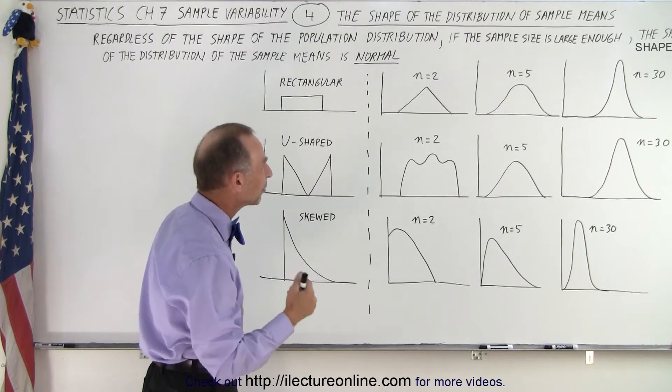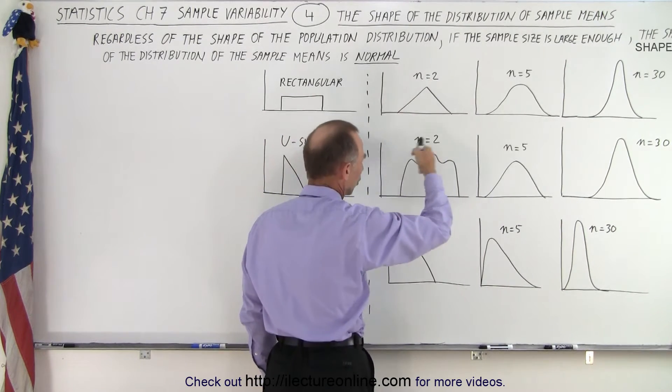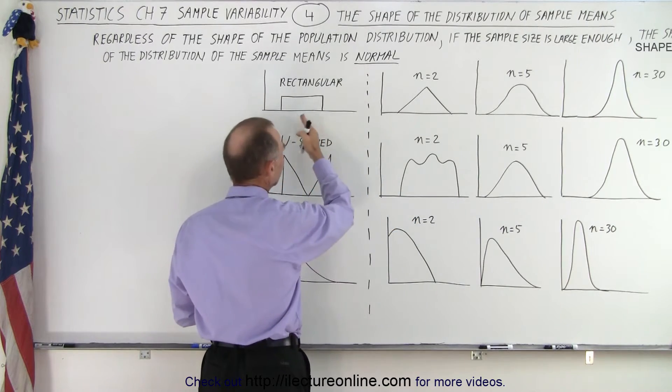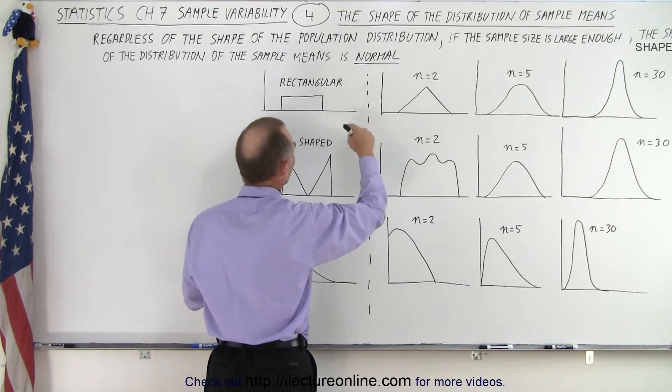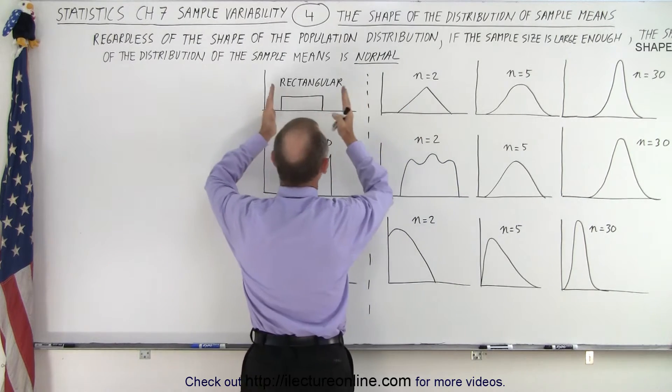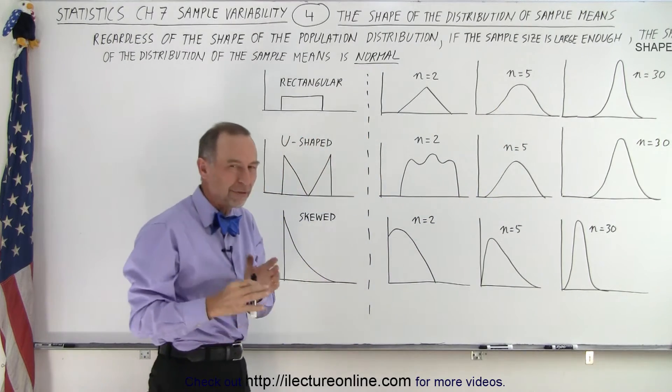Notice when the sample size is small, n equals 2, we don't have a normal distribution. It looks very peculiar. Notice that it somewhat resembles to some extent rectangular, not quite. It begins to take on the shape from its original population shape onto eventually what we call a normal shape.